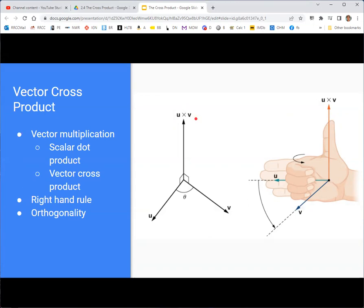You can think of u and v as having a plane that they're both in, and then the vector u cross v is the normal vector to that plane.